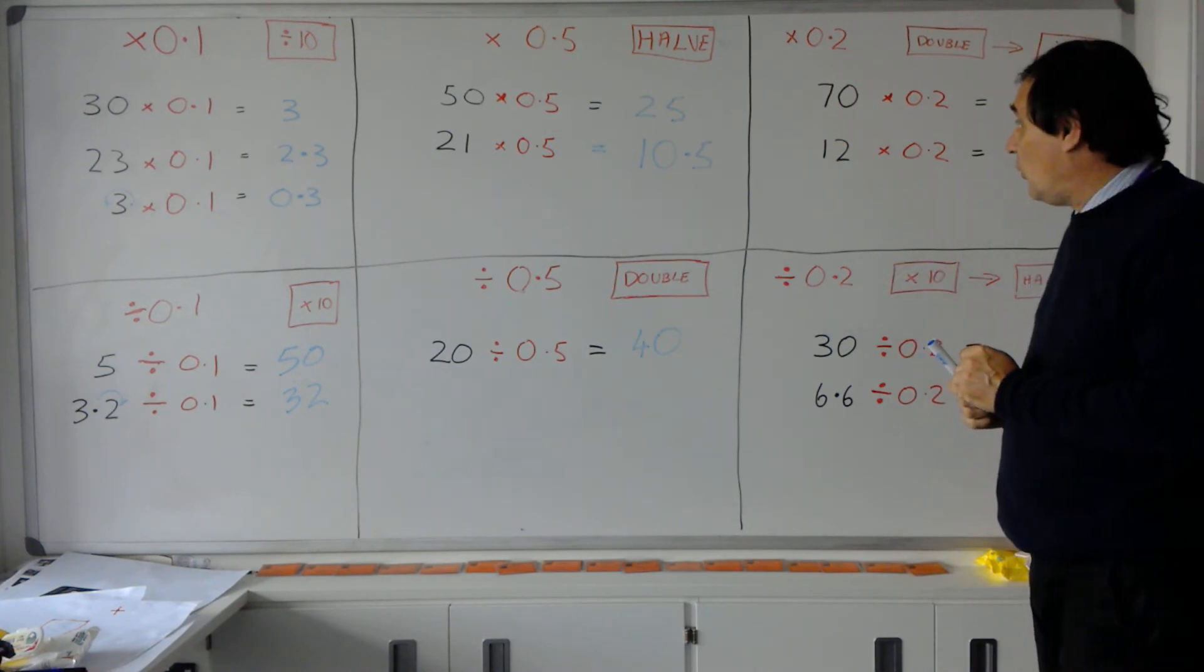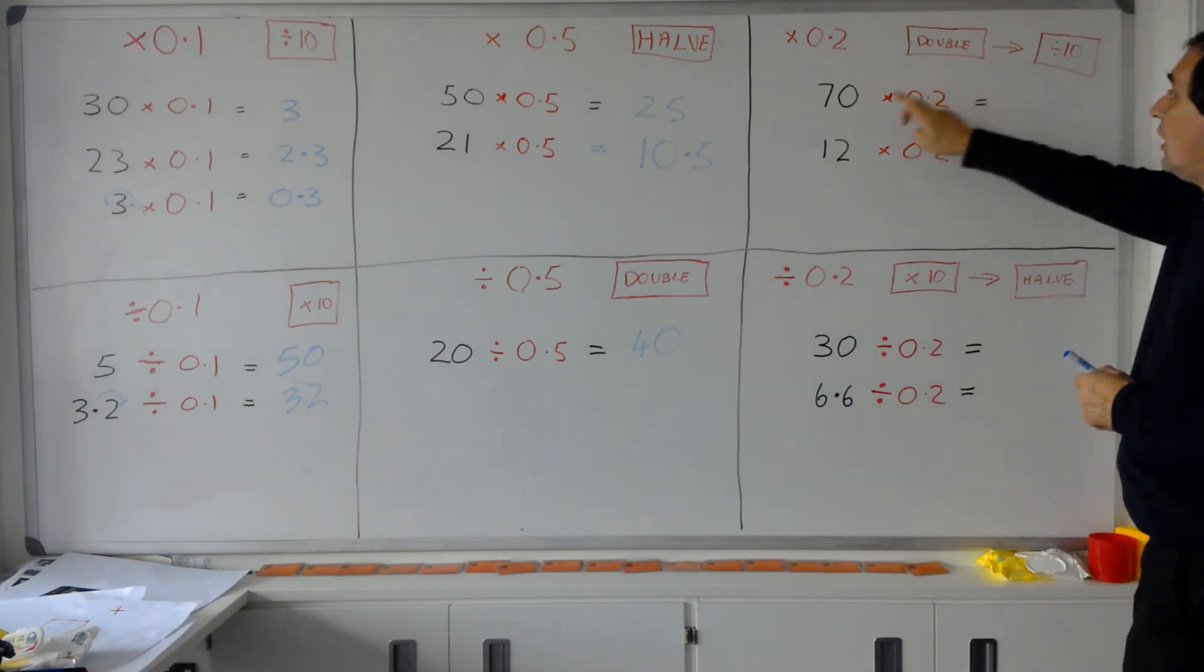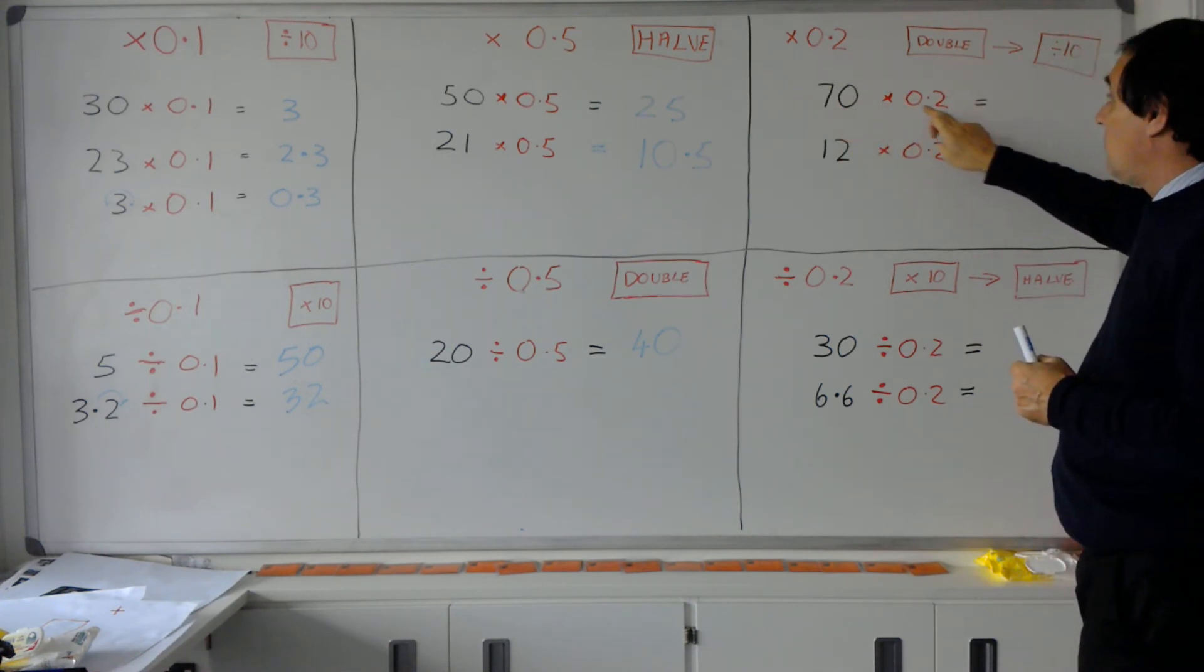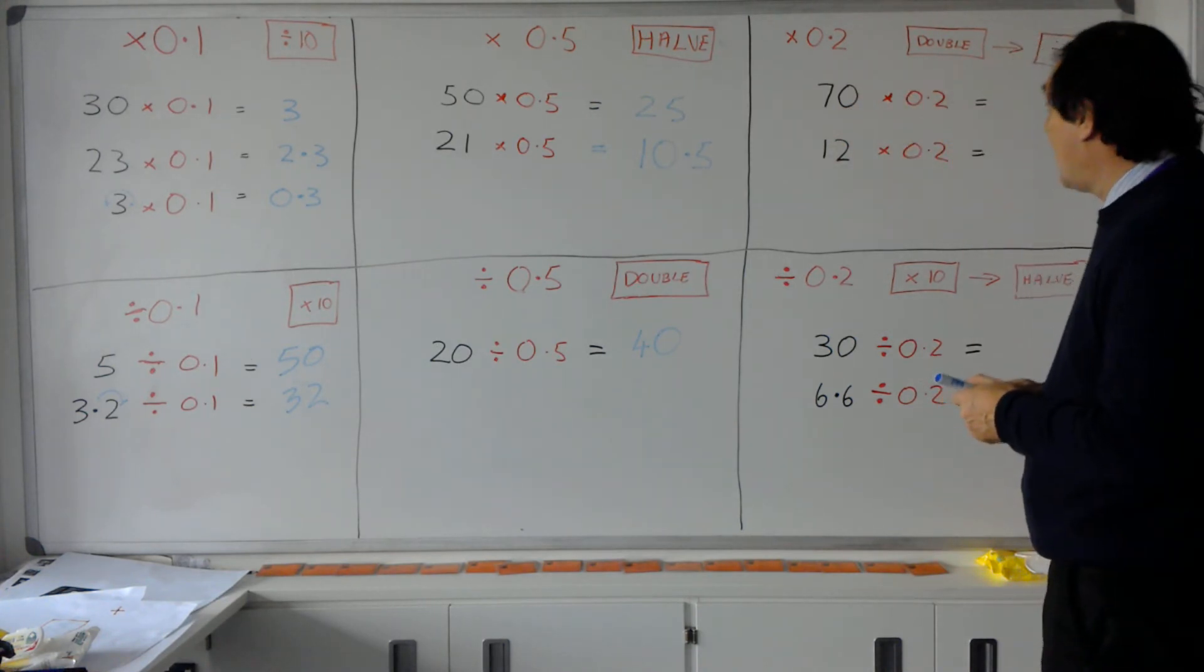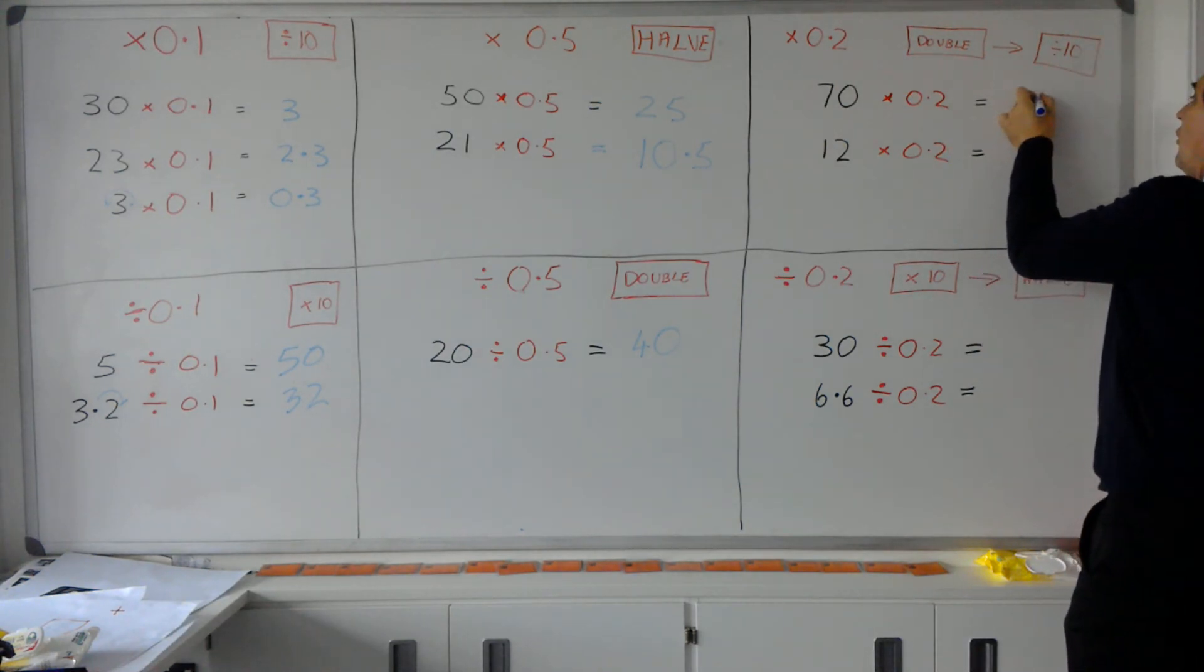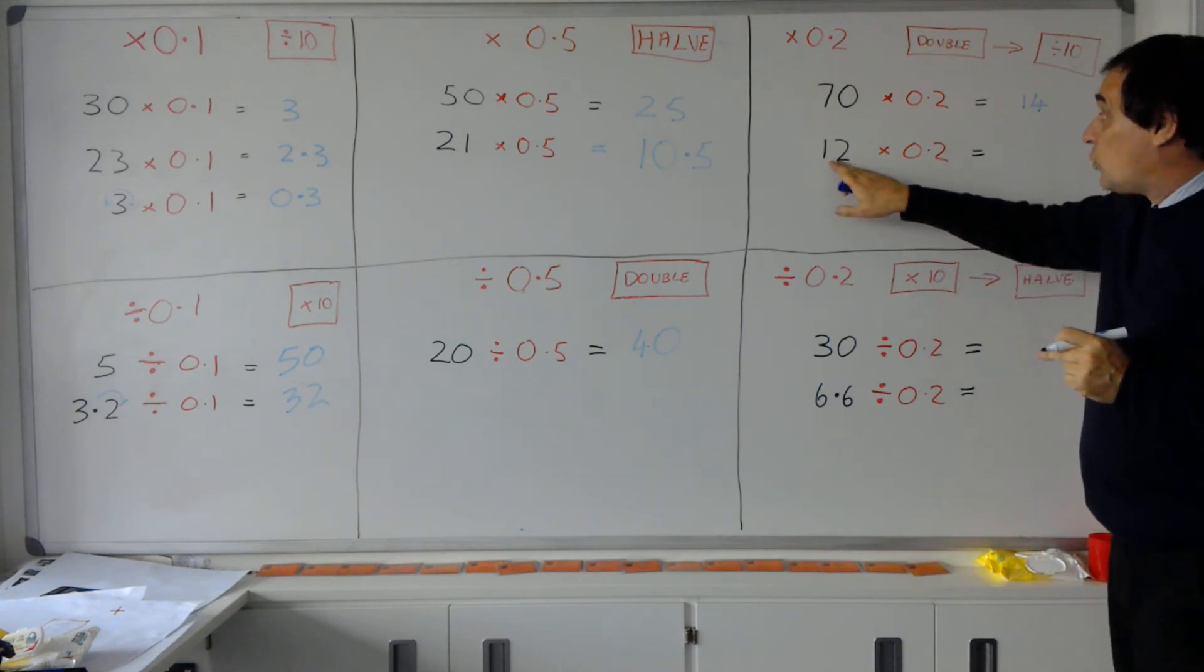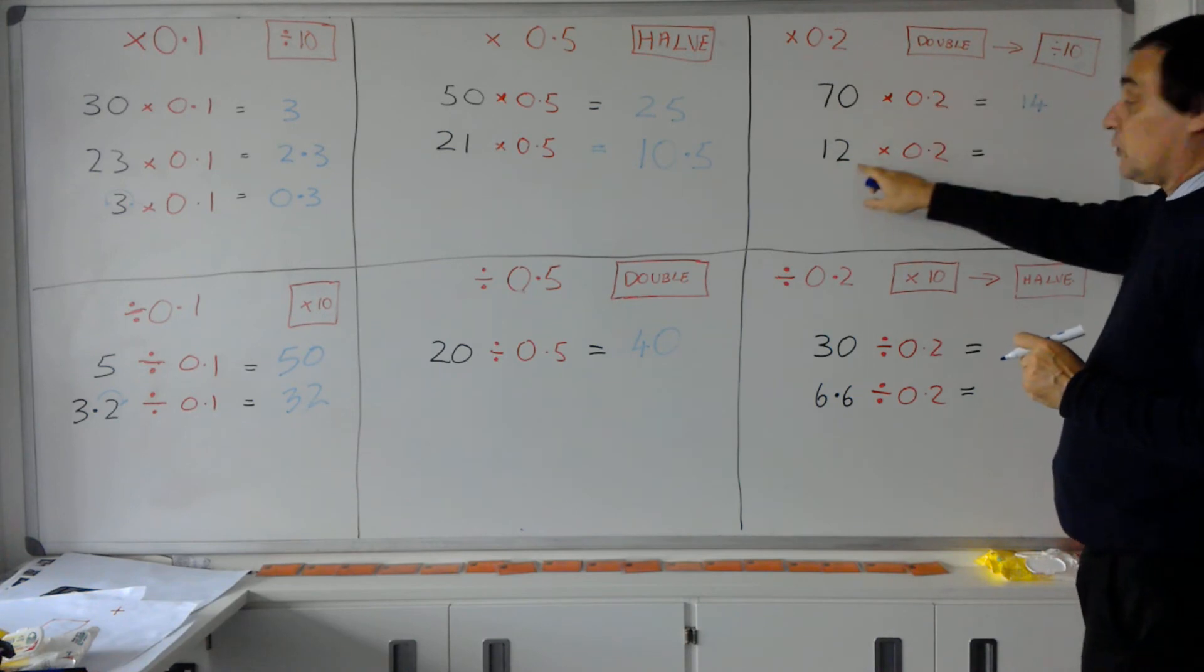So let's try here. 70 times by 0.2 means I double my 70 to give me 140, and then I use that 140 to divide it by 10 to give me 14.